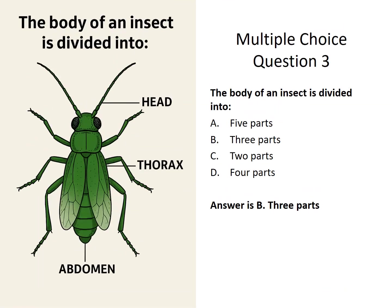The body of an insect is divided into five parts, three parts, two parts, or four parts. The correct answer is B: three parts.